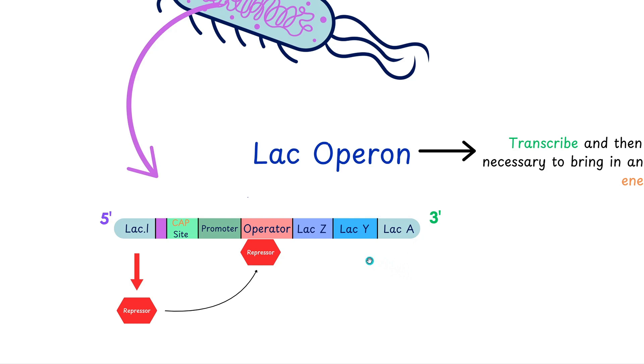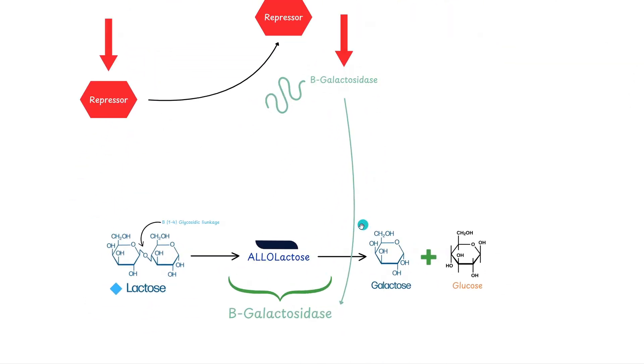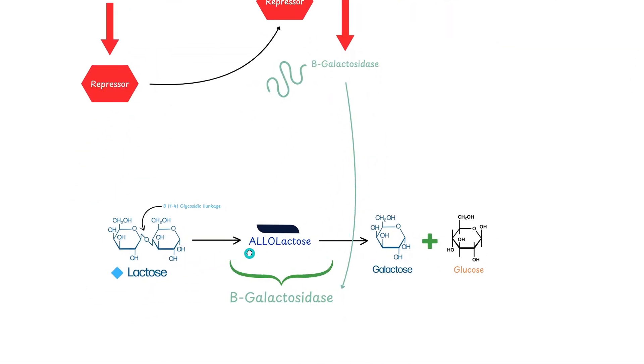Starting off, lac Z codes for beta-galactosidase, which breaks down, as we see here in this reaction, lactose into glucose and galactose via an allolactose intermediate.